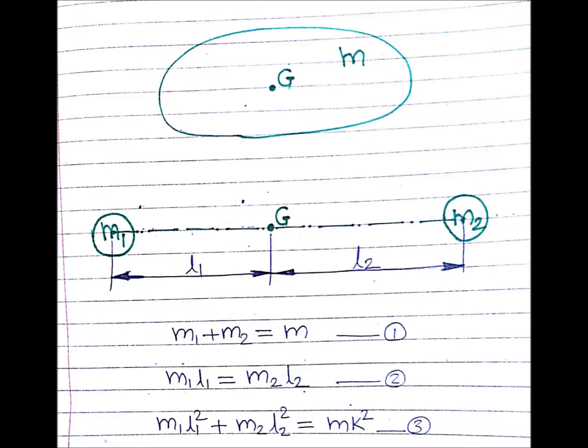Condition 3: the mass moment of inertia of the two-mass system about CG must equal that of the original rigid body. So M1·L1² plus M2·L2² equals M·K². When only the first two conditions are satisfied, the system is a statically equivalent system. If all three conditions are satisfied, then the two-mass system is a dynamically equivalent system.